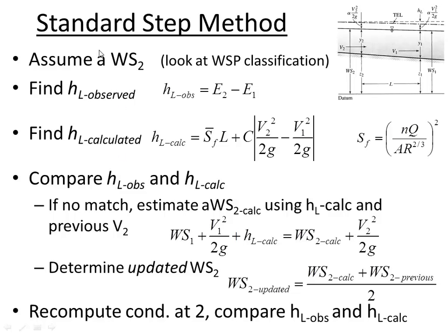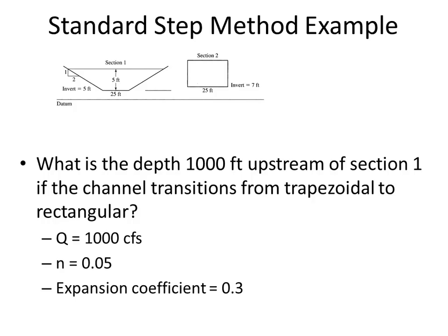Now we have two ways of looking at head loss: the observed head loss based on our assumed depth at two, and the calculated head loss based on Manning's equation at the midpoint. If they don't match, our guess for WS2 is wrong. We update WS2 based on the calculated head loss, find an average value, and go through the whole process again. A set of instructions like this doesn't fully make sense until we apply them to an example.